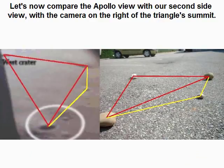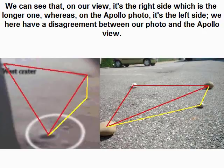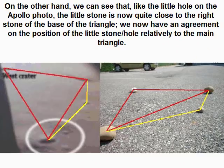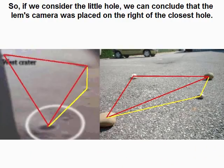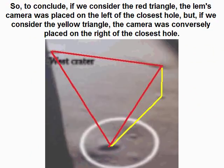Comparing the Apollo view with our second side view — camera on the right of the summit — we can see that on our view it is the right side which is longer, whereas on the Apollo photo it is the left side: a disagreement. On the other hand, like the little hole on the Apollo photo, the little stone is now quite close to the right stone of the base of the triangle — an agreement on the position of the little stone relative to the main triangle. So if we consider the little hole, the LEM's camera was on the right of the closest hole. But if we consider the red triangle, the LEM's camera was on the left of the closest hole — a direct contradiction.